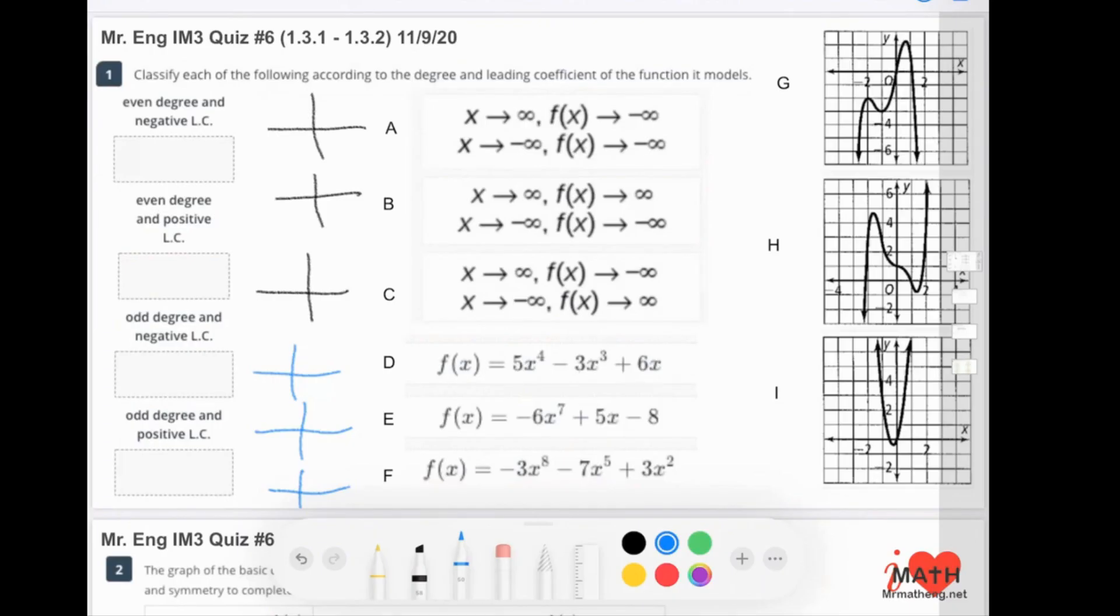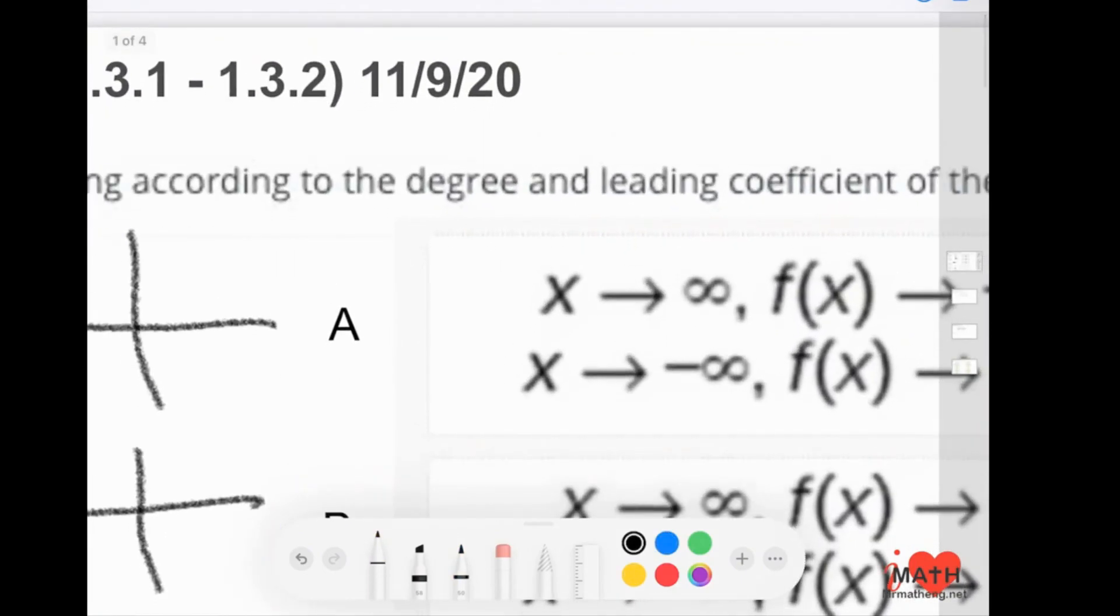Question number one: classify each of the following according to the degree, leading coefficient that it models. Just so we're on the same page, a degree is the number above here, and a leading coefficient is what's in front.